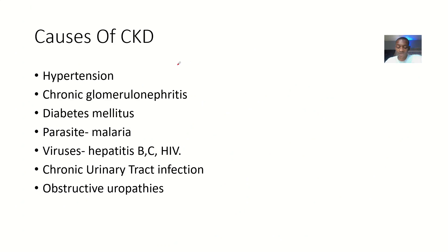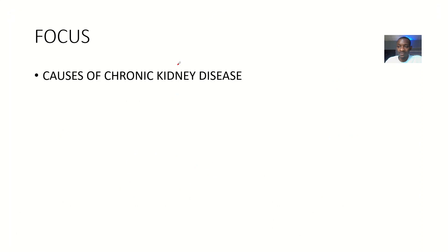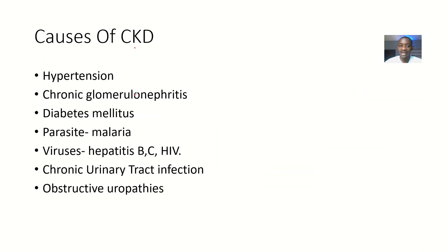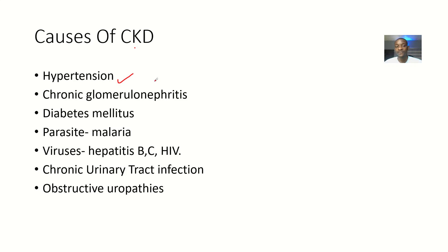For the causes of CKD, hypertension can cause chronic kidney disease because there is now high blood — the blood perfusion to the kidneys is coming at a high force. Another cause is chronic glomerulonephritis.